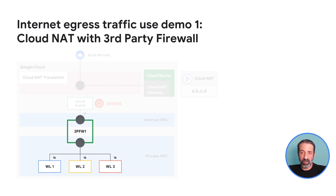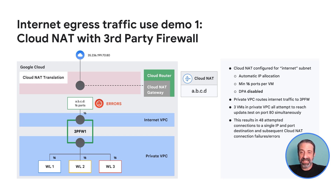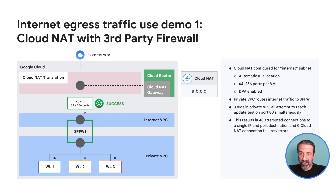Let's take a look at a quick demo. In this scaled-down environment, we have three workload VMs behind a third-party firewall connected to a private and a public-facing VPC. The three workload VMs will route traffic through the third-party firewall. Cloud NAT is configured with 16 ports per VM in the internet-facing VPC. The test starts with each VM making 16 simultaneous HTTP connections to their update server, for a total of 48 connections. Because Cloud NAT has only allocated 16 ports to the third-party firewall, only 16 of the 48 connections will succeed and the remaining 32 will fail. We'll then enable DPA, increase the minimum ports per VM, and run the test again — this time all 48 connections will complete with zero drops or errors.